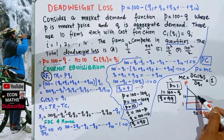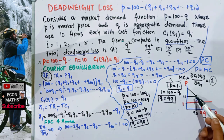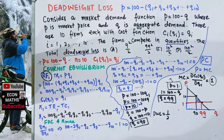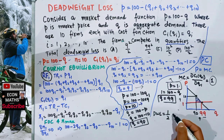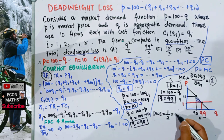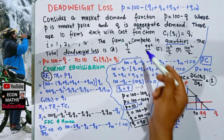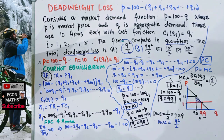The deadweight loss is the area of the right-angle triangle formed between the Cournot equilibrium point and the perfectly competitive equilibrium point. The base of the triangle is 99 - 90 = 9, and the height is 10 - 1 = 9. So deadweight loss = (1/2) × base × height = (1/2) × 9 × 9 = 9²/2. The correct answer is option A: 9²/2.